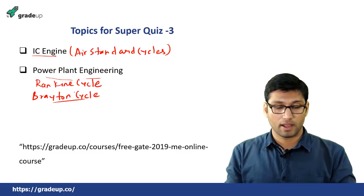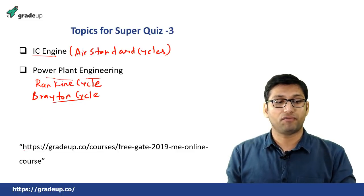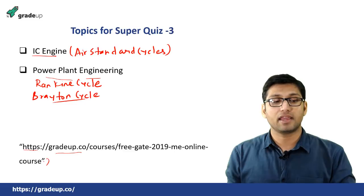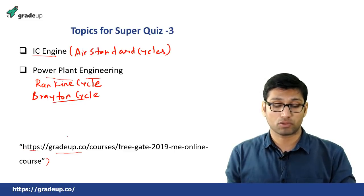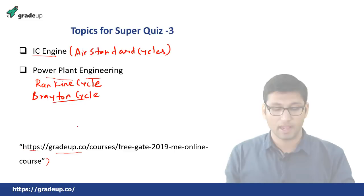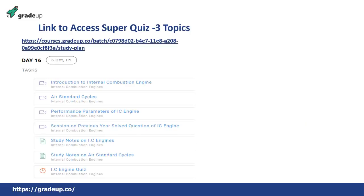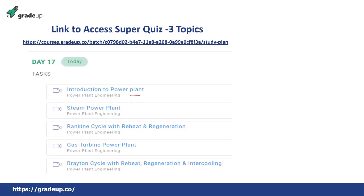To study these topics, go to our free video course — the link is given in the description below. On the thermodynamics study plan, Day 16 covers the introduction of internal combustion engines, air standard cycles, and performance parameters of IC engines. On Day 17, you have to study the introduction of power plants, steam power plants, and the Rankine cycle with reheat and regeneration.